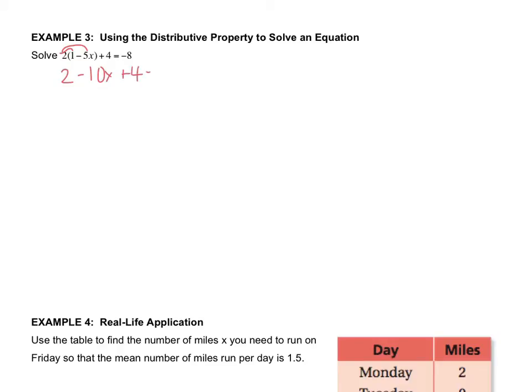And I'll bring down the plus 4 equals negative 8. Now, I have like terms. They're not variable terms, but they're number terms. 2 and 4 are both numbers. And since they're on the same side, you can combine them. So I'm going to choose to combine them before I move on to any inverses. So 2 plus 4 is 6. So 6 minus 10x equals negative 8.